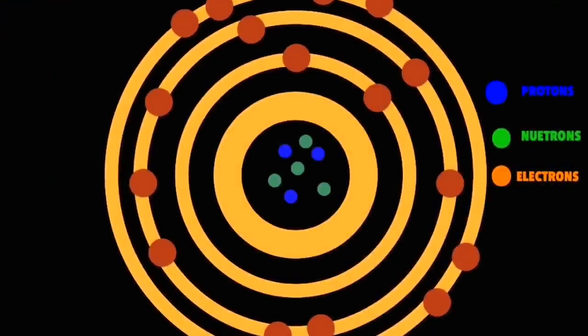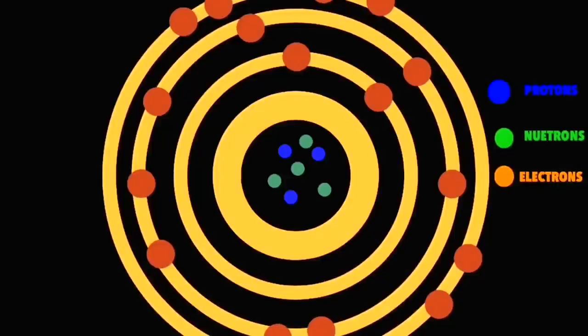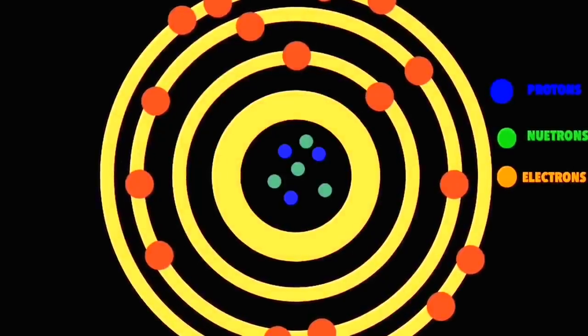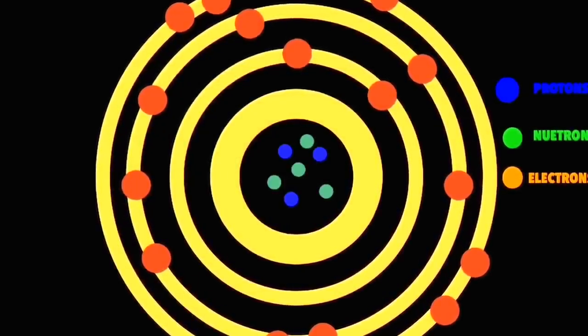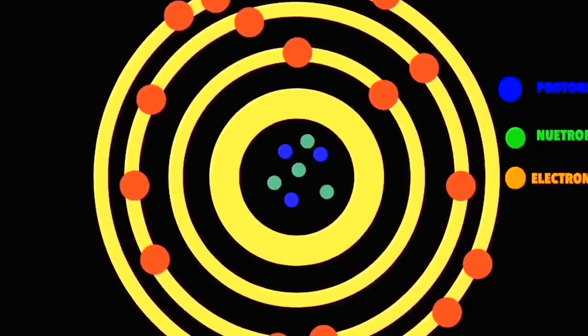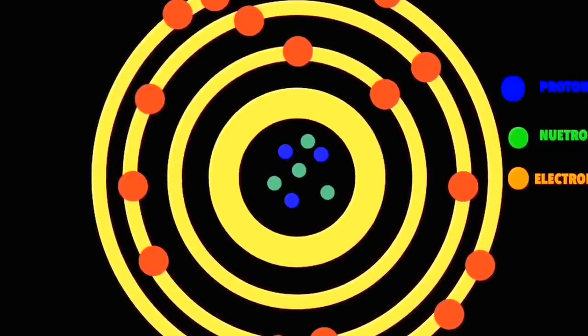The electrons which orbit the atom are leptons, which are also known as fundamental particles or particles that are not made up of any other smaller particle. However, what's more interesting about the electrons is that they possess a property called a wave function.